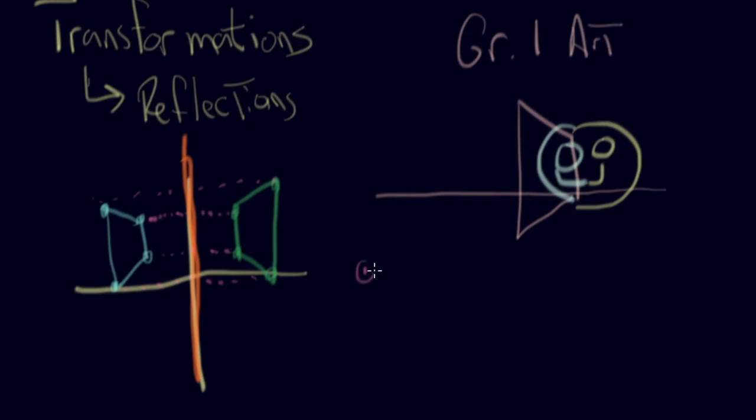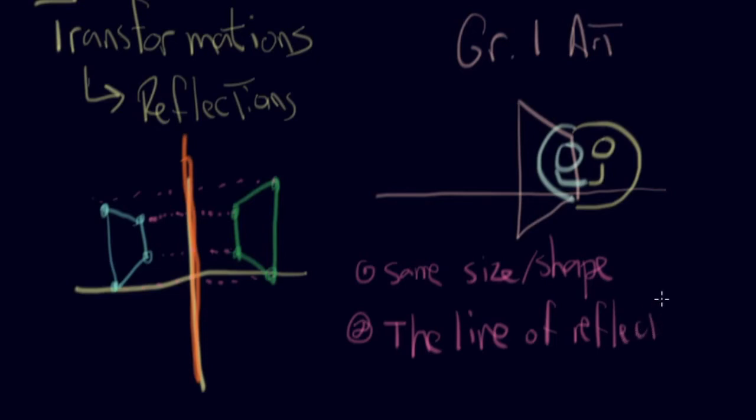So the big thing is, for when we're reflecting, you get the same size and shape. Therefore, the images are congruent. And the other thing is, the line of reflection is really important. The line of reflection.